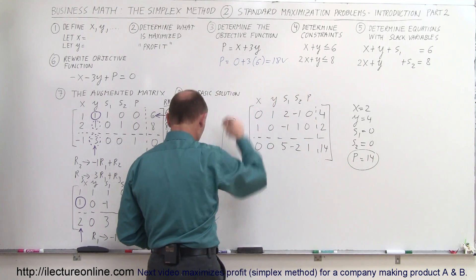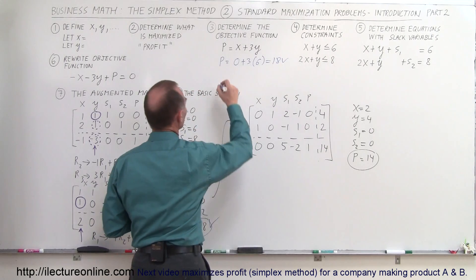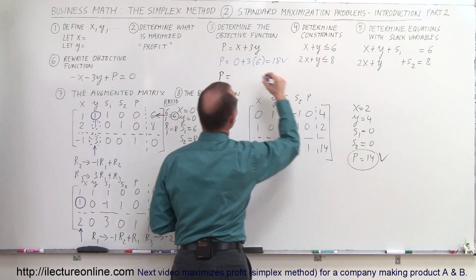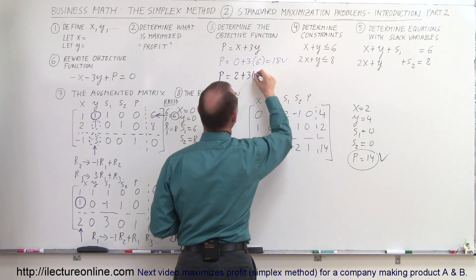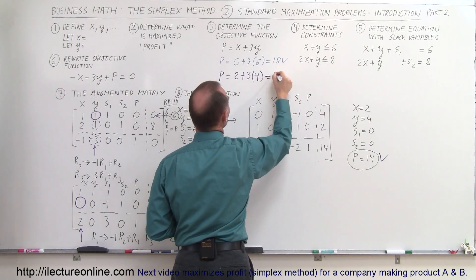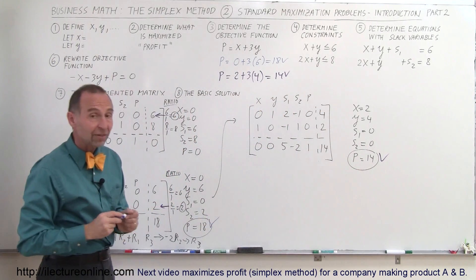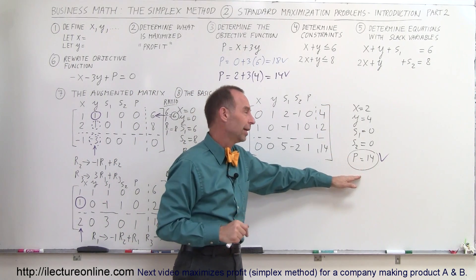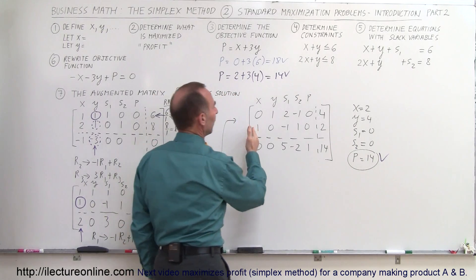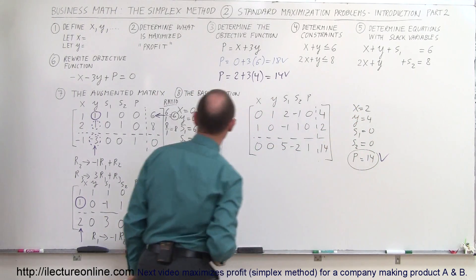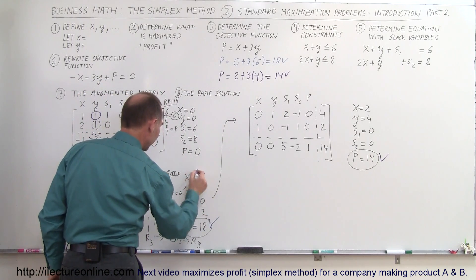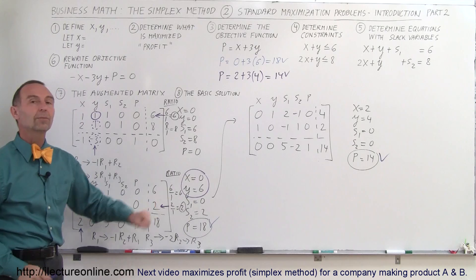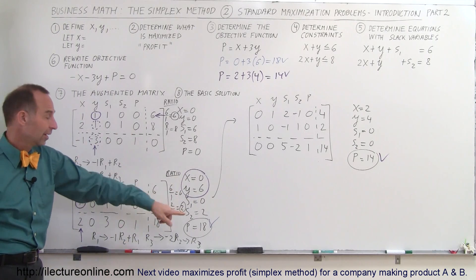Let's verify: profit equals x plus 3y equals 2 plus 3 times 4, which is 2 plus 12 equals 14 — confirming the matrix result. So yes, we found values for both x and y, but by producing 2 of x and 4 of y we get a lower profit. What we want instead is to produce 6 of y and 0 of x, which gives the maximum profit of 18.